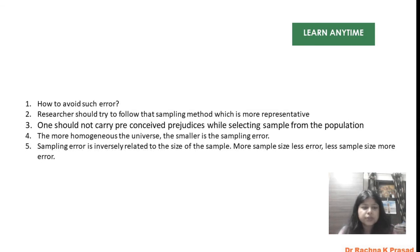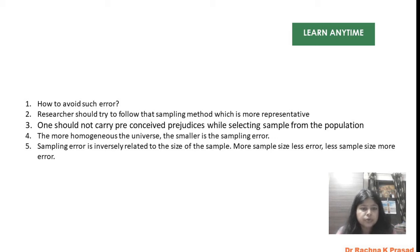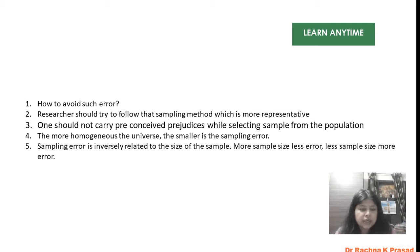How can we reduce those errors? Researchers should try to follow the sampling method which is most representative. Whether it is probability or non-probability sampling, the method needs to be more representative. Individual researchers, groups, organizations, or institutions conducting research should try to ensure this.